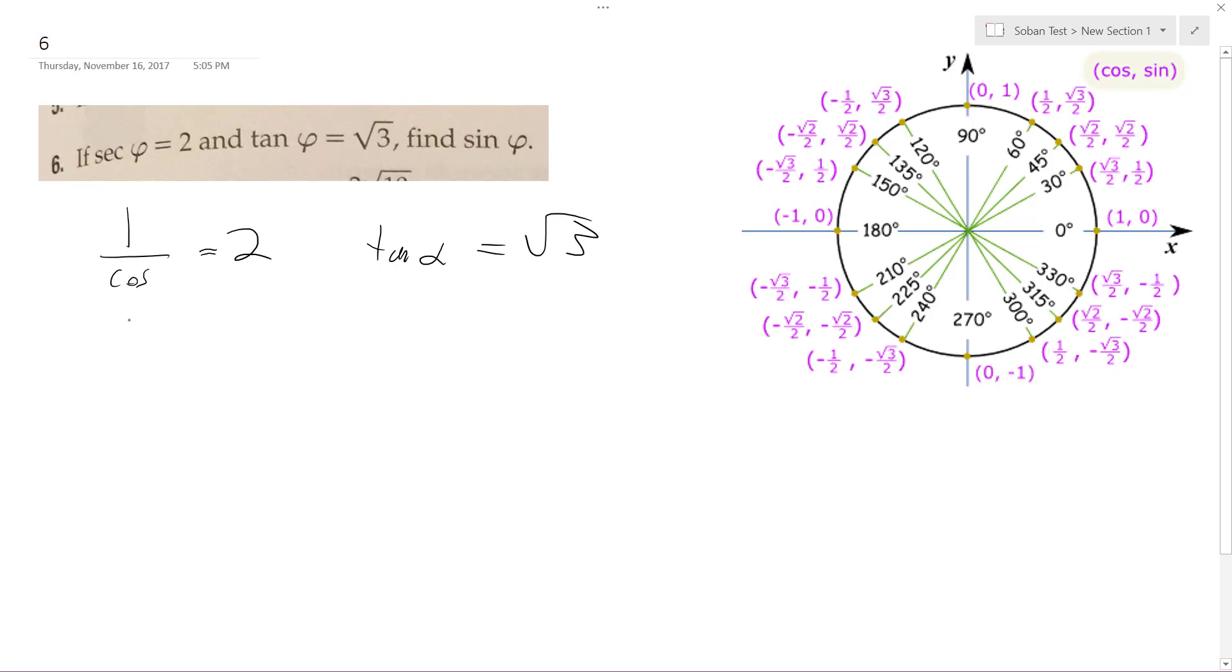Alright, so one over cosine is equal to two, so that means that the actual cosine of theta is equal to one half, so that means that this is like a 30-60-90 triangle.